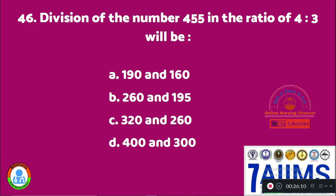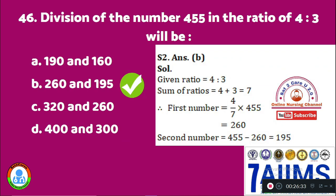Question 46: Division of the number 455 in the ratio of 4:3 will be: Option A: 190 and 160. Option B: 160 and 195. Option C: 320 and 260. Option D: 400 and 300. The given ratio is 4:3; sum of ratio is 7. The first number is 4/7 × 455 = 260. The second number is 455 − 260 = 195. So the answer is 260 and 195.